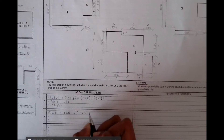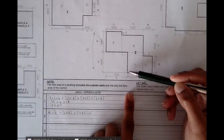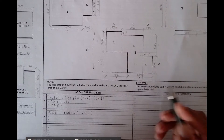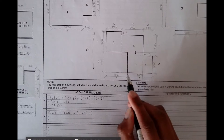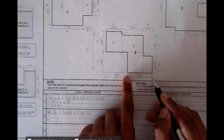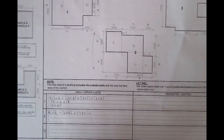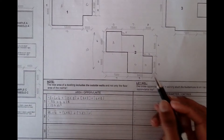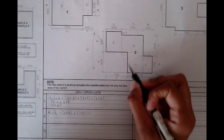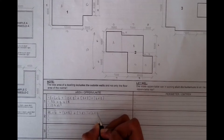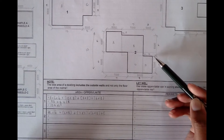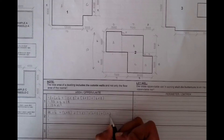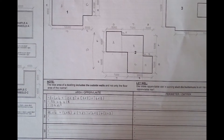Moving on to C: C already has the length of 6, but we need to find the breadth. The overall distance from here to here is 8, and removing the part which is 3 at the top, we get a total of 5. So C is 6 multiplied by 5. For the last part, D, we have 5 by 3 — that 3 is the same 3 as shown here. So D is 5 by 3.